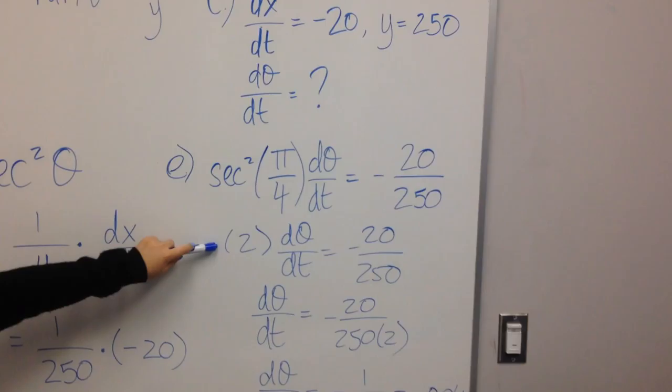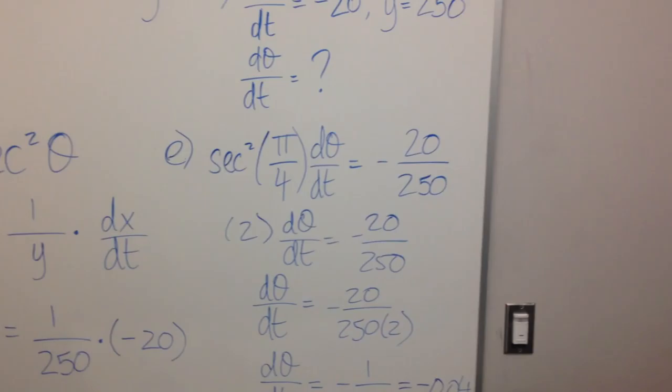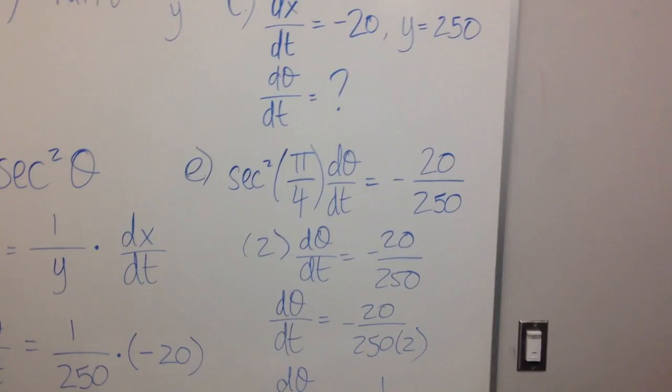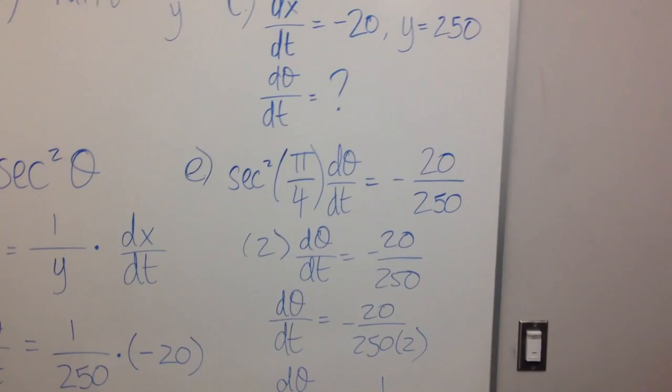Secant squared pi over 4 equals 2. So we then multiplied each side of the equation by 1 half in order to get the derivative of theta with respect to t by itself. We plugged it in and we got the derivative of theta with respect to t equals negative 1 over 25 or 0.04.